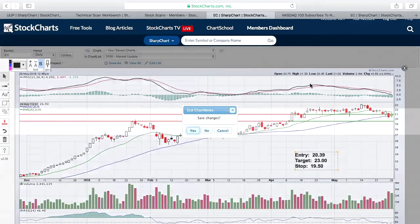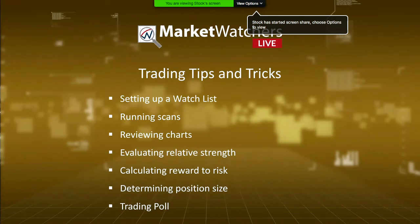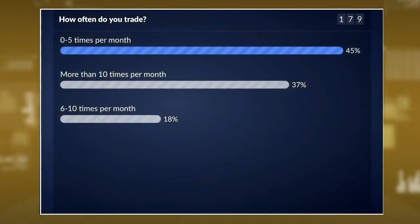Let me pull up a summary of what we went over. We started off talking about a watch list and showed how to set one up. We ran scans against that watch list, reviewed some charts, pulled up one particular stock, evaluated relative strength, calculated reward to risk, and determined position size. Now I want to pull up the trading poll and see how often everybody trades. For me, I'm probably in the 'more than 10 times a month' category — that's about 37% of you.